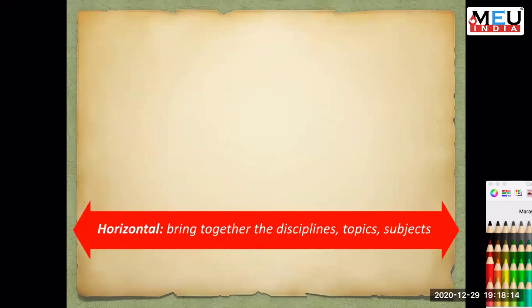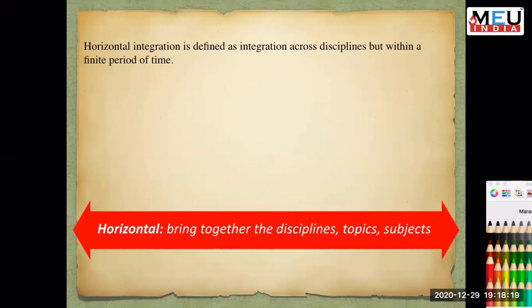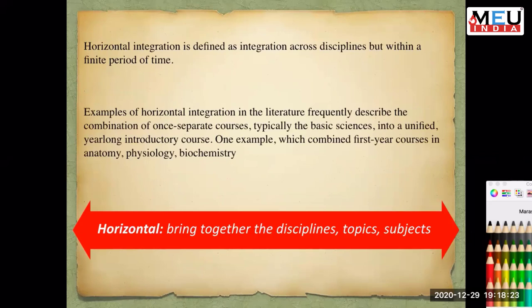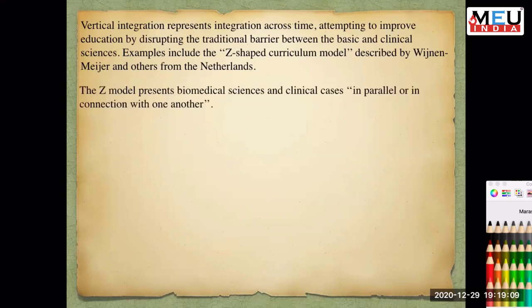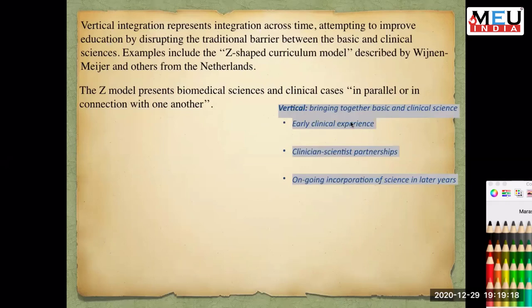Horizontal integration is defined as integration across disciplines but within a finite period of time. A common example frequently described in literature is combining previously separate courses — typically basic sciences — into a unified year-long introductory course, such as the liver example discussed. Vertical integration happens across time in an attempt to improve education by disrupting the traditional barrier between basic and clinical sciences. We will understand what is a Z-shaped curriculum model and what is an H-shaped curricular model. The Z model presents biomedical sciences and clinical cases in learning happening in parallel.